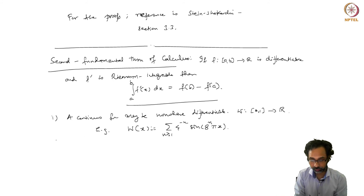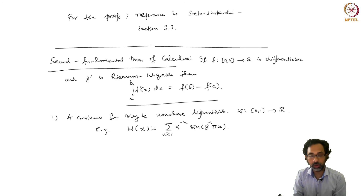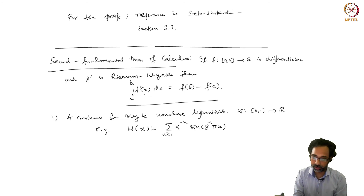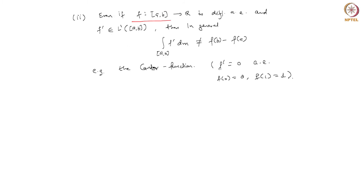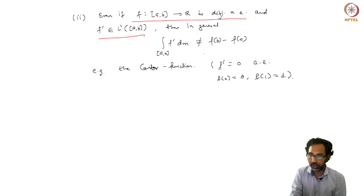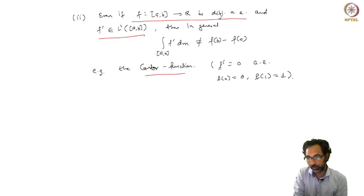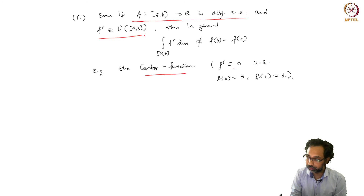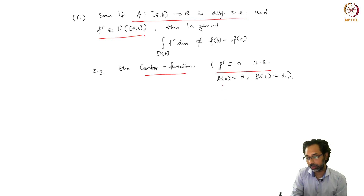On the other hand, there are continuous functions which are differentiable almost everywhere but for which the equation does not hold even if we replace the Riemann integral by the Lebesgue integral. Even if we have an almost everywhere differentiable function f for which the derivative is in L1, it is not true in general that the Lebesgue integral of f' gives you f(b) - f(a). A counterexample is the Cantor function, defined using the Cantor set. For this function, the derivative is 0 almost everywhere since it is constant almost everywhere, but f(0) = 0 and f(1) = 1, so the left-hand side is 0 but the right-hand side is 1.